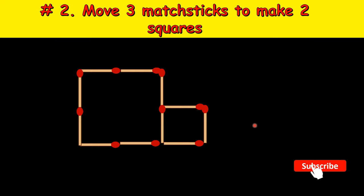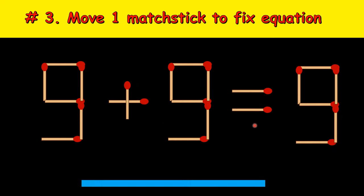Now let's see the third puzzle. You have to correct this equation by moving just one matchstick. So nine plus nine equal to nine, this is not correct. Your time starts now.